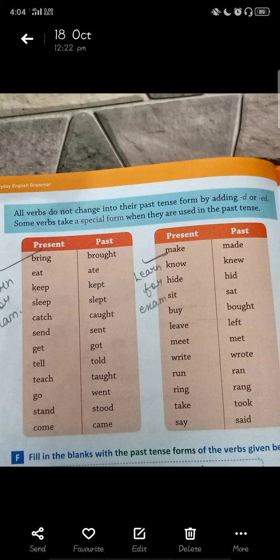All verbs do not change into their past tense form by adding D or ED. Some verbs take a special form when they are used in the past tense — it is written very clearly here. These verbs are used in a special way in the past tense.